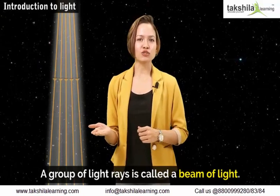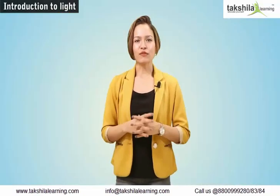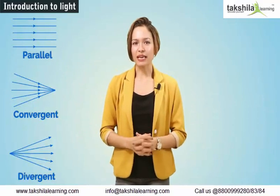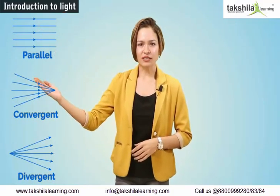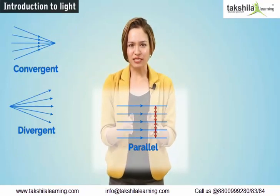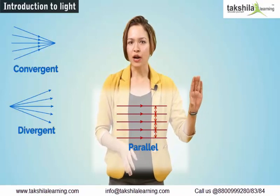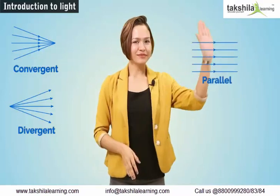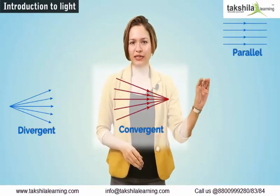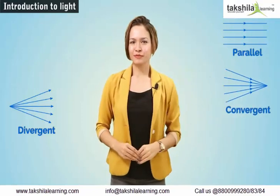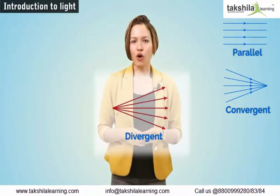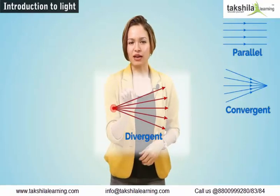A group of light rays is called a beam of light. A beam of light may be parallel, convergent, or divergent. Rays which have the same distance between them as they travel are parallel — parallel rays do not meet. The rays that actually meet or appear to meet at a point are convergent. The rays that actually move away from each other or appear to move away from each other from a point are divergent.